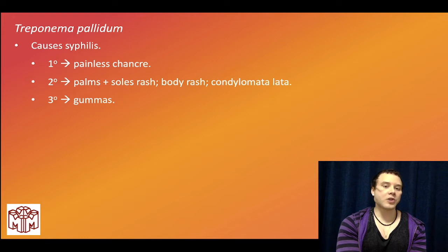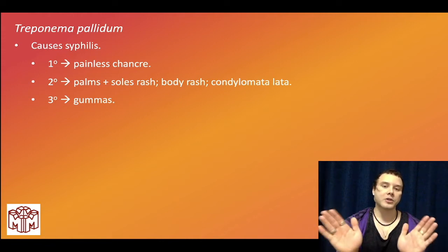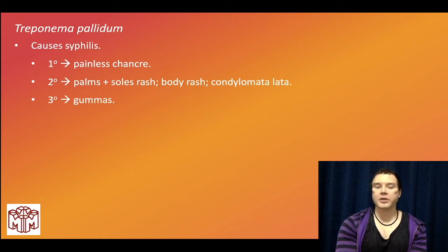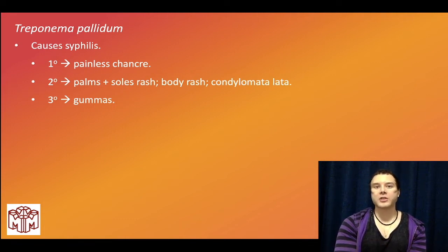The chancre can go away on its own over roughly six weeks, then we can have a latency period with no outward pathology, followed by re-emergence of secondary syphilis weeks to months later. Secondary syphilis classically causes a palms-and-soles rash, a maculopapular body rash, and painless genital plaques referred to as condylomata lata. Palms-and-soles rash is very high yield — not just secondary syphilis, but also Rocky Mountain spotted fever (rickettsia), Coxsackie A (hand-foot-mouth disease), and Kawasaki disease.